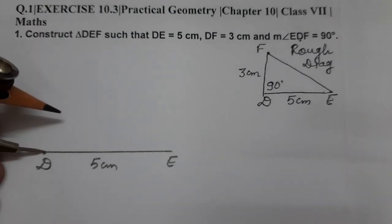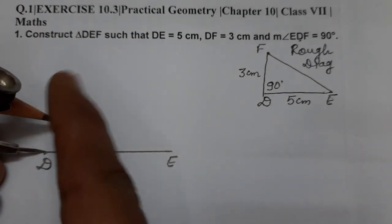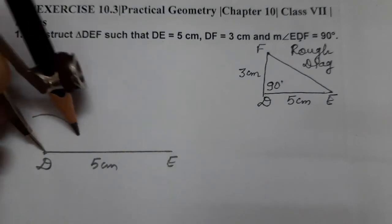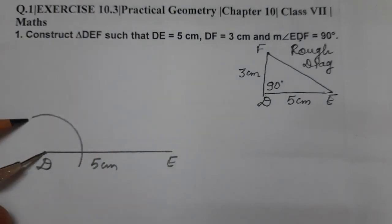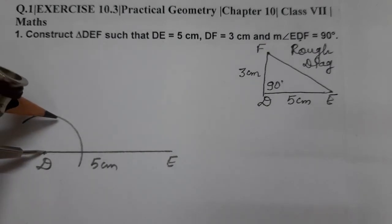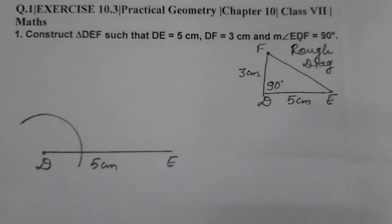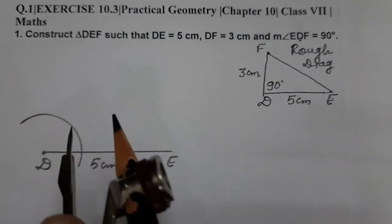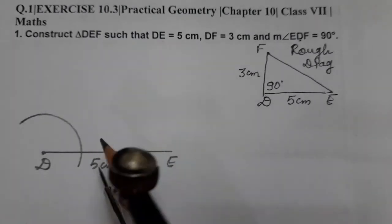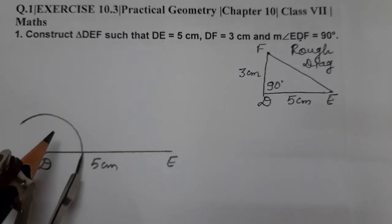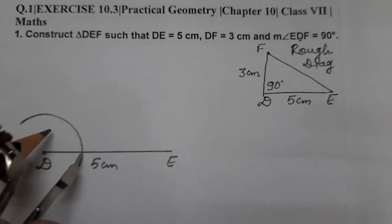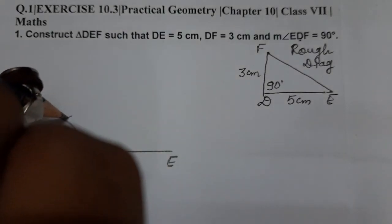So let's take a convenient arc radius. We are going to make 90 degrees, so 60 degrees is the base for all. So first of all, make an arc like this, and without disturbing the arc radius, put the pointer here on this arc and cut an arc.